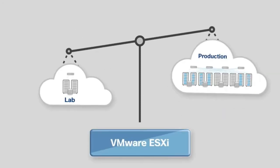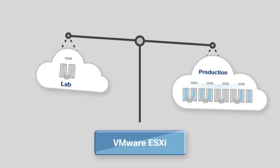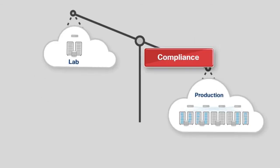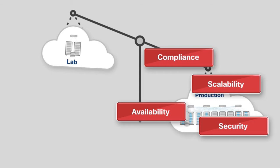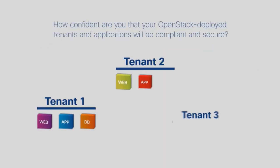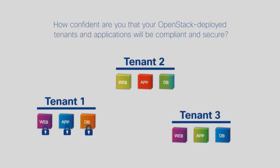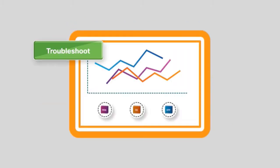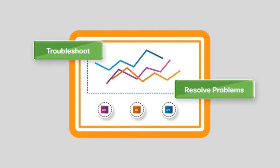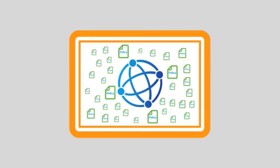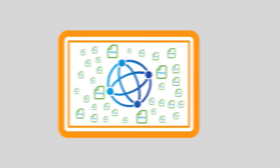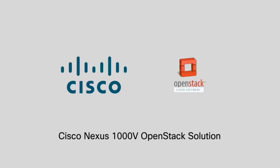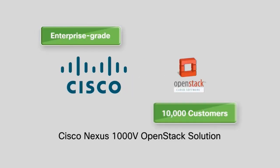Perhaps you're moving from a VMware ESXi vCenter production environment to OpenStack KVM, and you're concerned about compliance, security, availability, and scalability. How confident are you that your OpenStack deployed tenants and applications will be compliant and secure? That you'll be able to monitor those applications and quickly troubleshoot and resolve problems, and that all required policies can be applied consistently across the infrastructure? Fortunately, you can gain that confidence with Cisco Nexus 1000V for OpenStack, an industry-proven enterprise-class virtual networking solution.